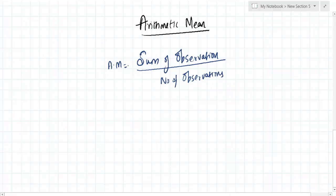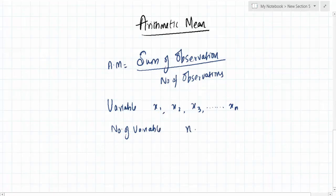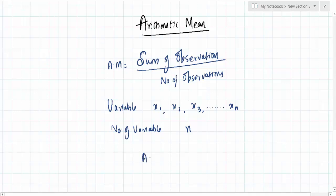How do we express this mathematically? Let me define the variables. Say the variables are x1, x2, x3, and it goes till xn, and the number of variables is n. When we have variables x1, x2, x3 till xn and the number of variables is n, the arithmetic mean is x1 plus x2 plus x3, continuing till xn, all divided by n. This is the arithmetic mean.